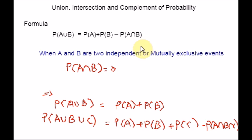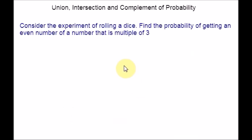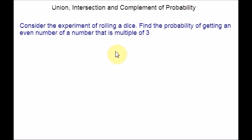Hope you are clear with this formula. Let us discuss a few examples and see how to apply this formula. Here is the example question: Consider the experiment of rolling a dice. Find the probability of getting an even number or a number that is a multiple of 3. First, you have to list out the sample spaces, and then you can find the probability.